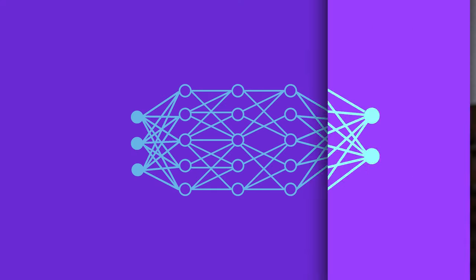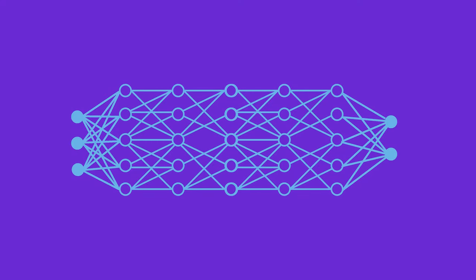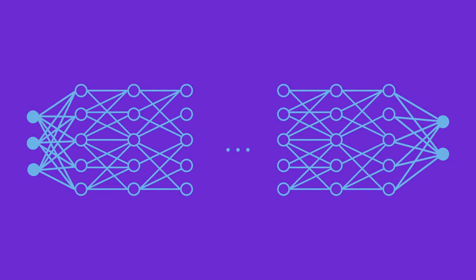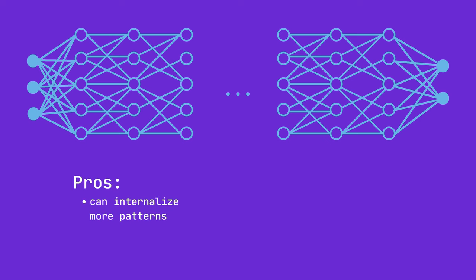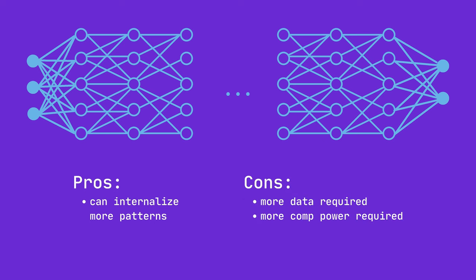Language models are based on artificial neural networks. In the context of LMs in particular, larger networks with more parameters have been shown to achieve better performance. A higher number of parameters allows the model to internalize a greater variety of statistical patterns within the language data they are exposed to. On the flip side, larger models require more computational resources and training data to reach their full potential.